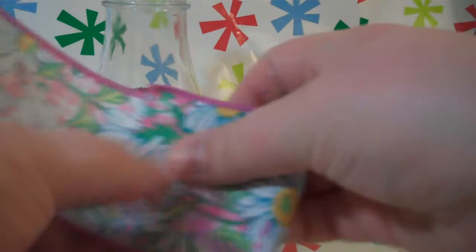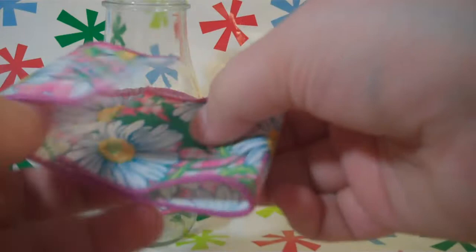Now for the bow part just get another strand of ribbon and fold both sides to the center. And then for the other two sides fan it in the middle. Like so. And then tie it with a piece of yarn. Cut off the excess, adjust it and it should look like this. And then glue it to the bottle.